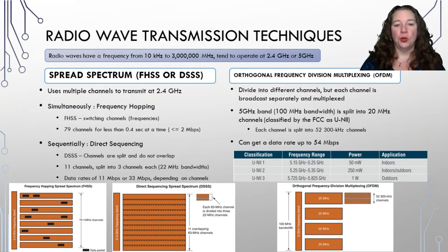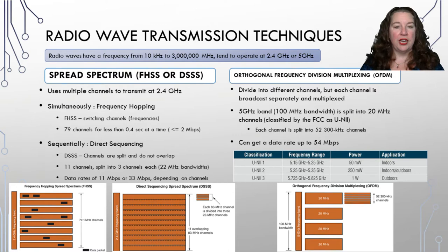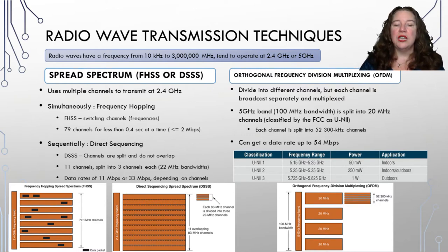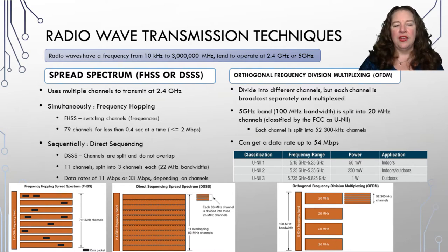In sequential spread spectrum, we have direct sequencing. Direct sequencing splits channels so they don't overlap. We take our 83 megahertz and build 11 overlapping channels, each divided into three 22-megahertz channels. Each channel has a bandwidth of 22 megahertz. This allows a data rate of 11 megabits on one channel or 33 megabits using all three channels. The images here show how frequency hopping and direct sequencing look a little bit differently.